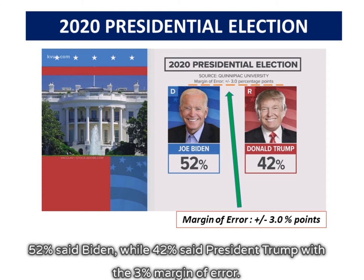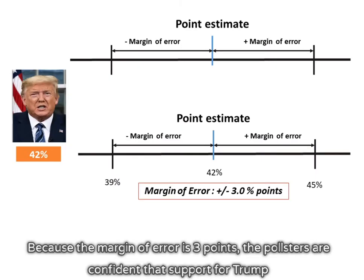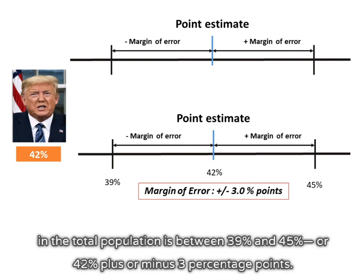52% said Biden, while 42% said President Trump with a 3% margin of error. Because the margin of error is 3 points, the pollsters are confident that support for Trump in the total population is between 39% and 45%, or 42% plus or minus 3 percentage points.